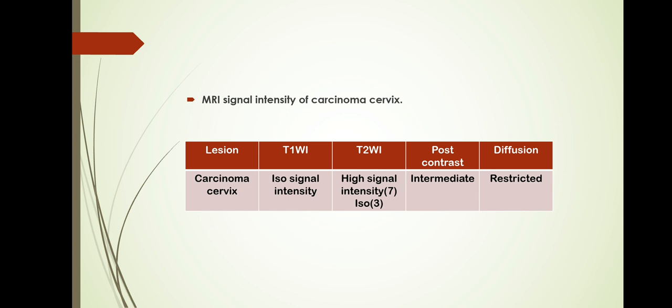The pathology shows the following MRI signal intensity in different sequences. In T1-weighted images, showing ISO intensity. T2-weighted images in 7 patients showing high signal intensity, and in 3 patients showing ISO signal intensity. It shows intermediate intensity on post-contrast and restriction on diffusion-weighted imaging.